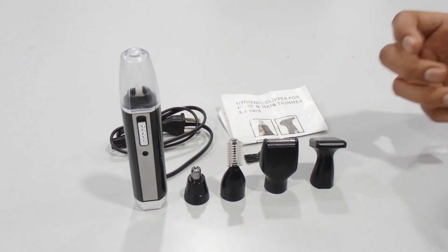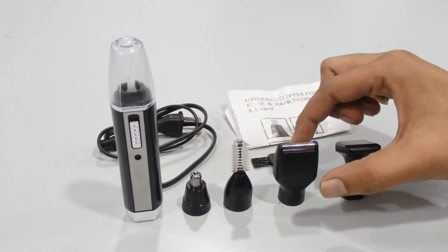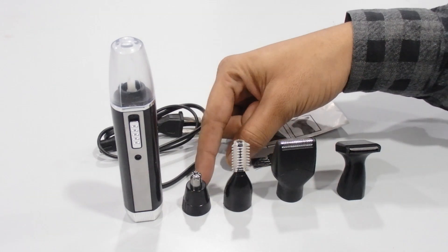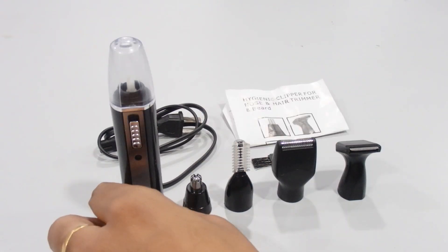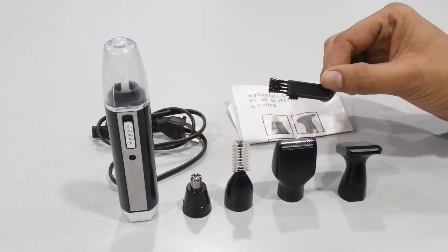First of all, it's a four-in-one trimmer. We have a beard trimmer, sideburn trimmer, eyebrow trimmer, and nose and ear trimmer. We also have the machine itself, one charging cable, one user manual, and a cleaner brush.